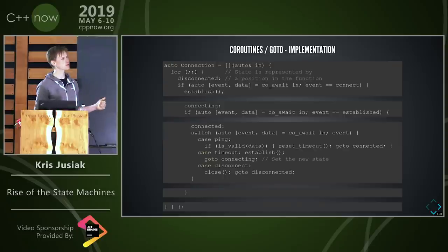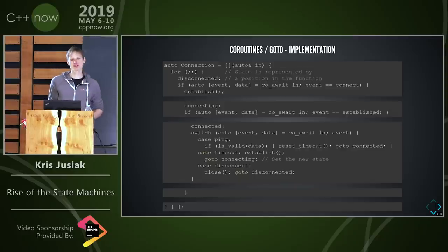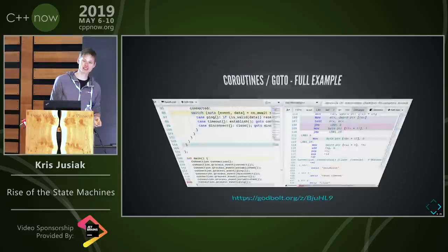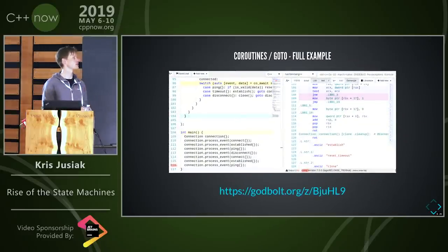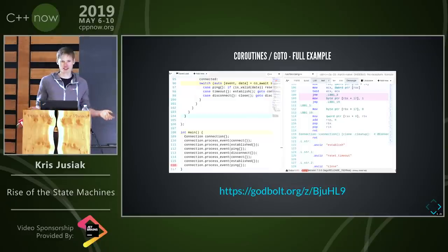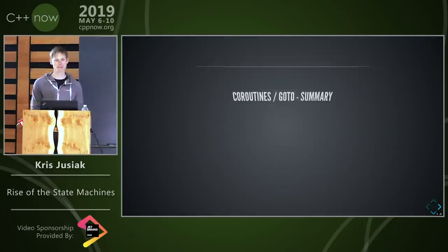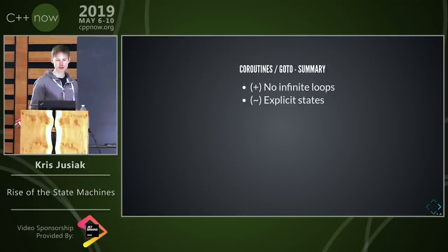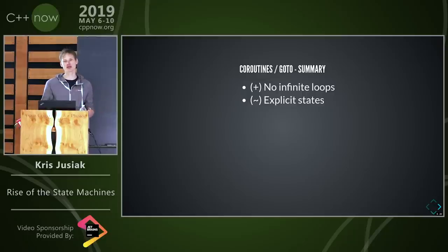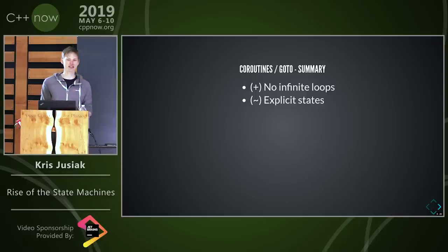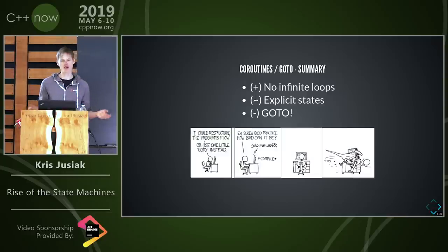So the same implementation but instead of infinite for loops we have go-tos and labels. You can jump to a different position in the function. Whether that's better or worse — I have strong opinions about go-to but don't want to get into it — it is possible, and it makes states explicit. The performance doesn't change much, and it still might be inlined. We don't have infinite loops, and we have explicit states, but we have go-to — and you all know how that story ends.